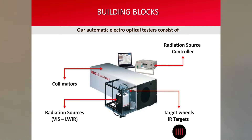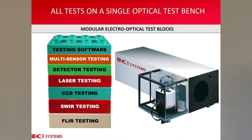First, a few words about some of our building blocks. CI Systems has gained experience in designing and manufacturing automatic electro-optical testers. Our testers consist of radiation sources from the visible to the longwave infrared, collimators, target wheels, targets, and other equipment for performing thermal camera testing of FLIR, SWIR camera testing, CCD — sometimes also referred to as visible testing or day TV camera testing — detector testing of all kinds, multi-sensor channel testing, all integrated into our automatic testing software.